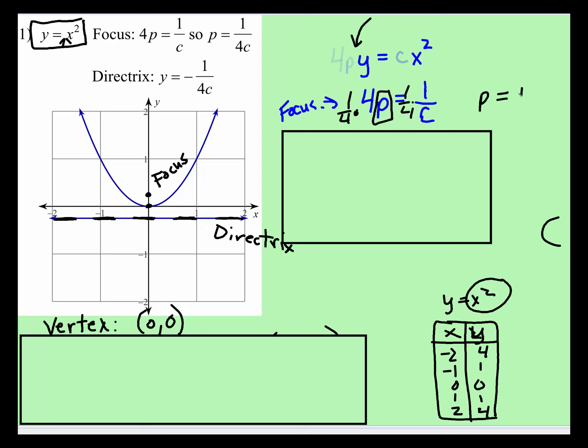and that would give you p is equal, and I'm going to put positive or negative, depending on which direction of the parabola, 1 over 4c.